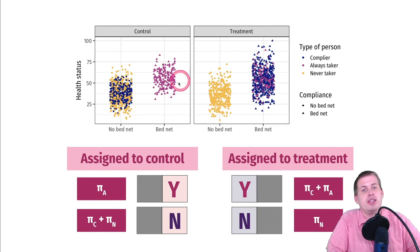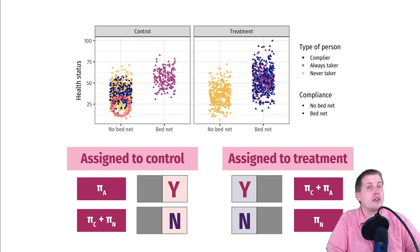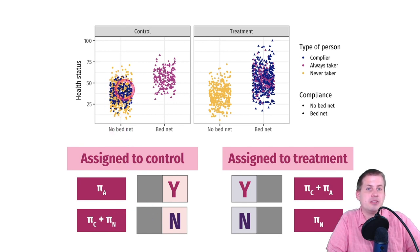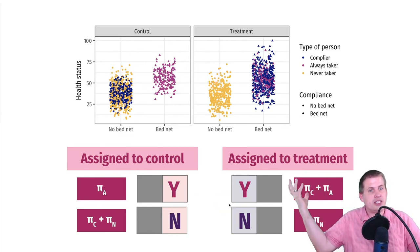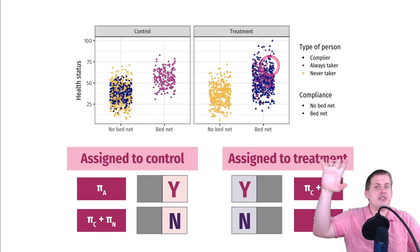In the control group, if assigned and didn't do it, you're either a complier or a never taker — tangled up together. We use the PI symbol for proportions: π_C is the percent of compliers in the treatment group, π_A is the percent of always takers, and π_N is the percent of never takers. The treatment group's bed net users are the mixture of compliers and always takers; the non-users in the treatment group are all never takers.